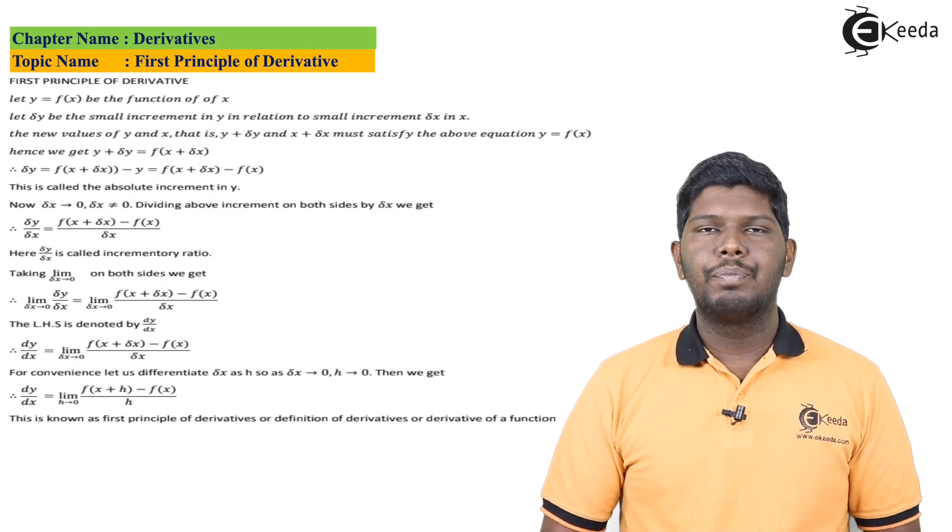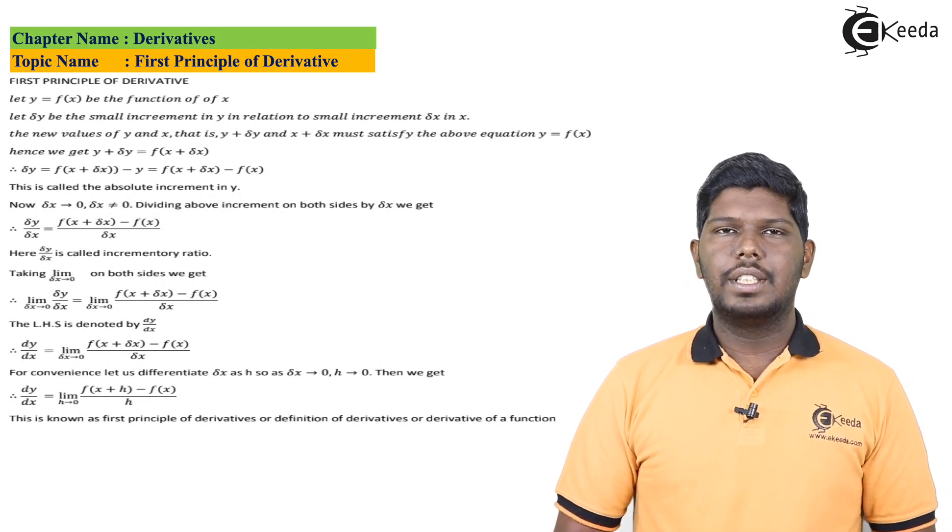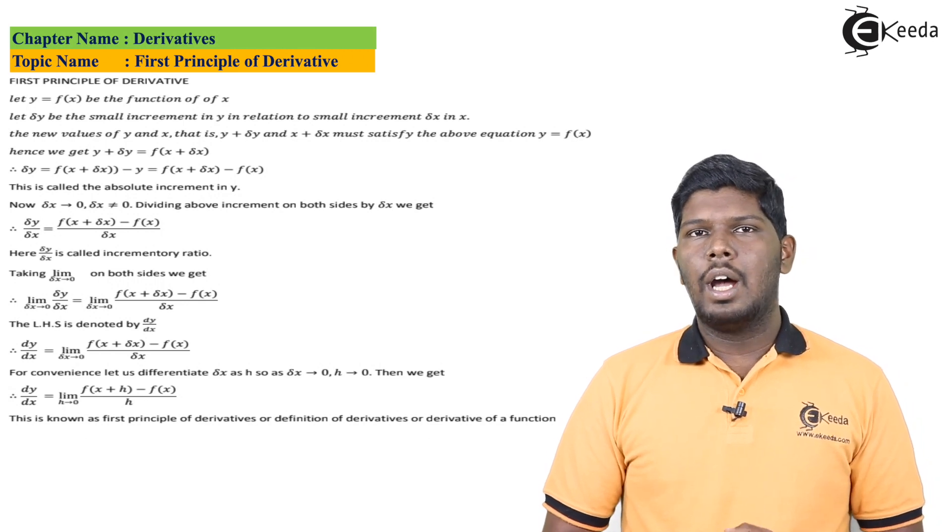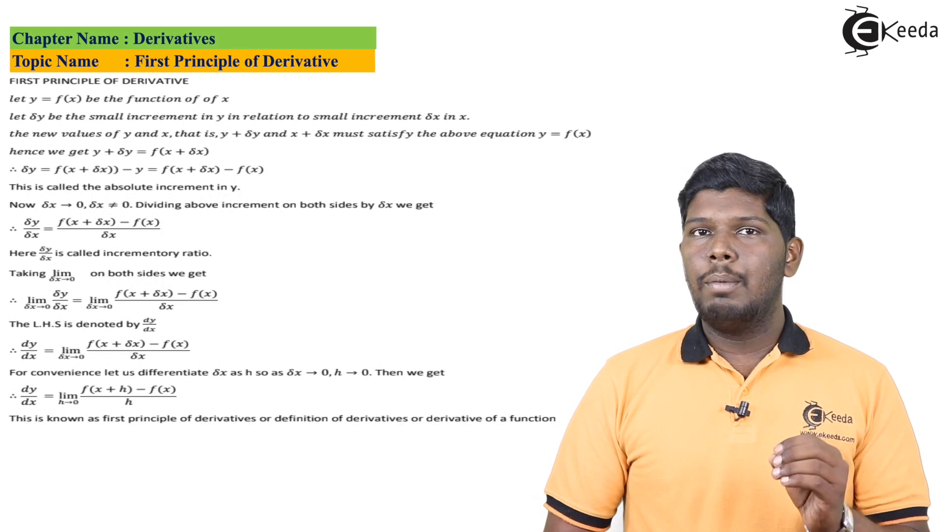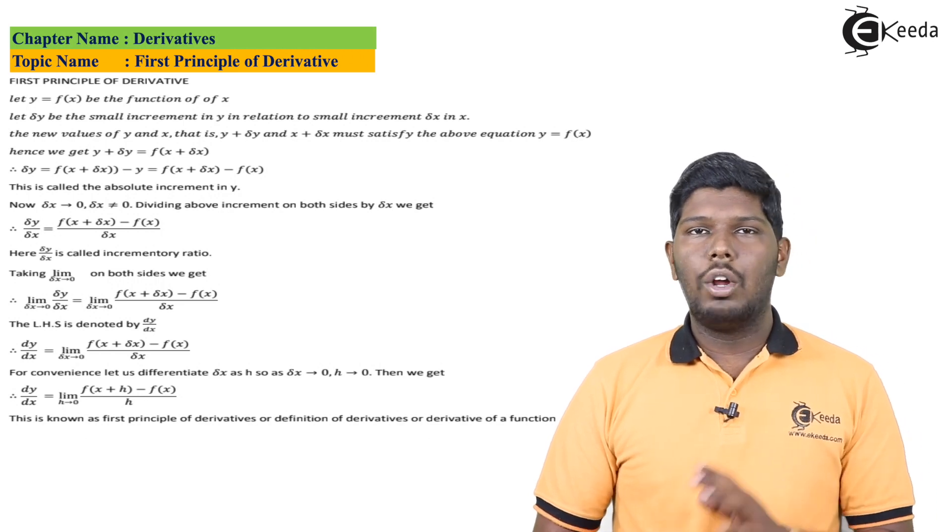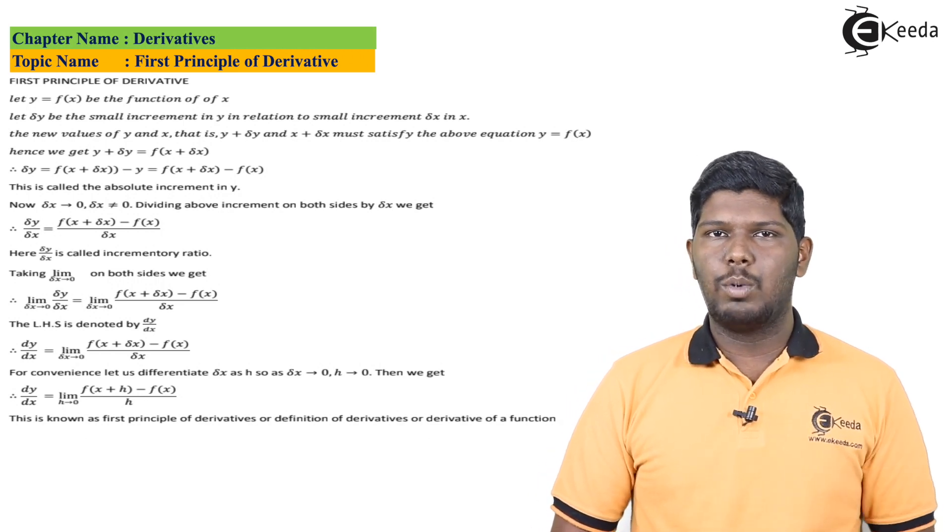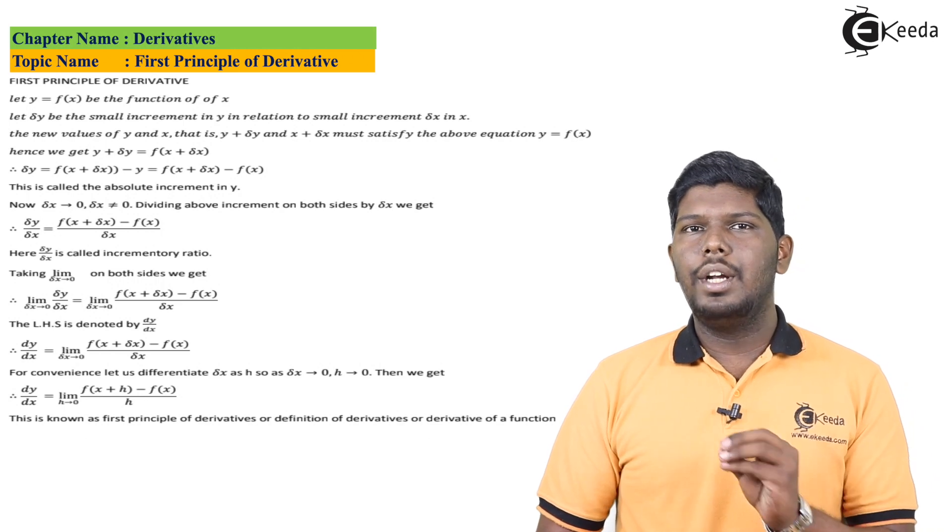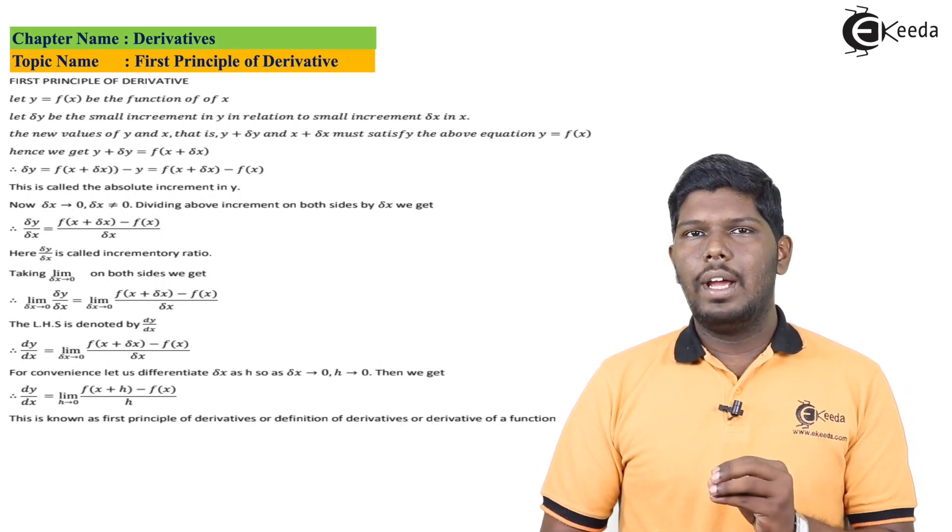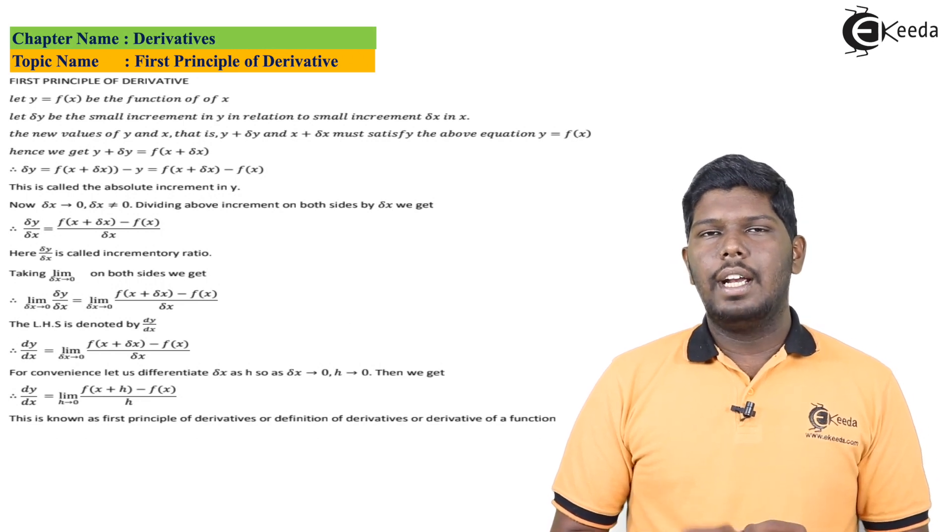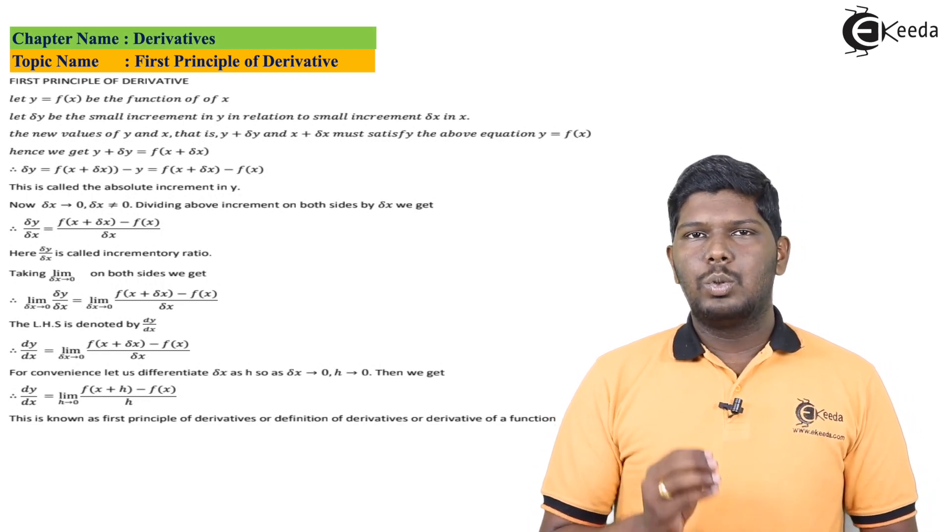This principle is called the principle of first derivative. For that let us consider a function y is equal to f of x. Now if I say del y is a small increment in y, remember this increment can be positive or negative, not necessarily always positive. The point to be noted is that y is changing. So let del y be an increment and for that del x is also going to change. I will say del x be the change in x.